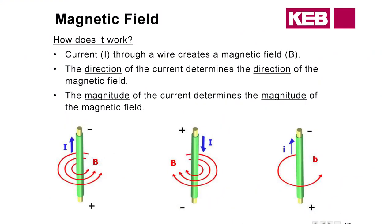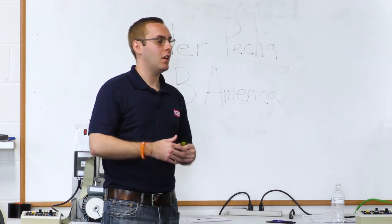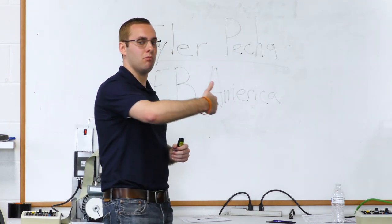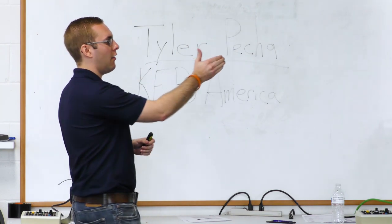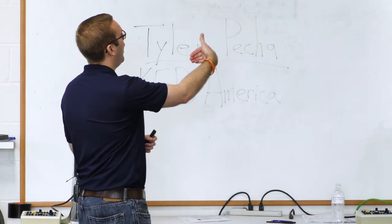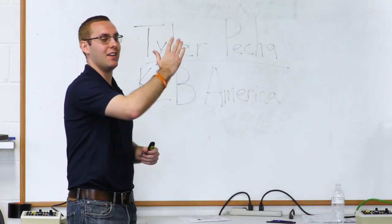If you start out at the most basic sense: if you have current going through a wire, the direction of the current is going to dictate the direction of the magnetic field. A quick, easy trick you can do is the right-hand rule — you can just take your thumb, point it in the direction that the current is flowing, and then curl your hand around, and that'll tell you the direction of the magnetic field. It only works for your right hand.